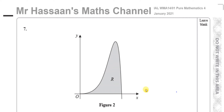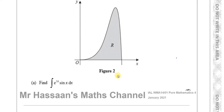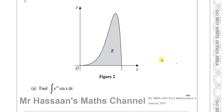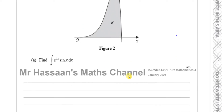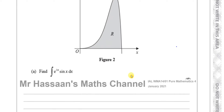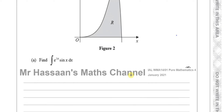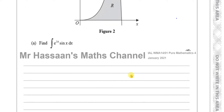Welcome back. Now we're on question number 7 from this P4 International A-Level January 2021 paper from Edexcel. This question, first of all part A, has a diagram related to part B. Part A says: find the integral of e to the power of 2x times sine x with respect to x.